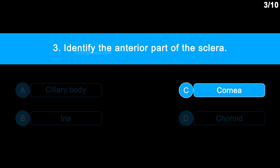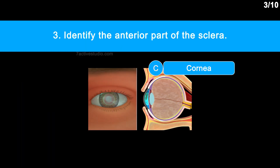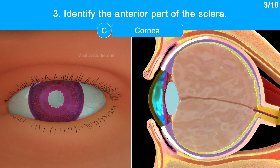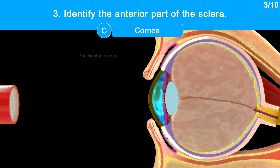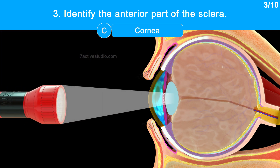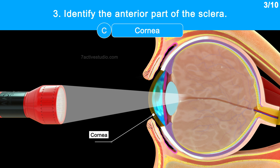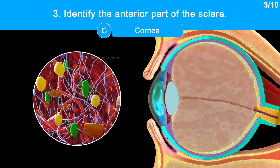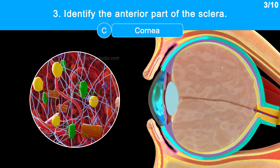The correct answer is option C, cornea. The anterior transparent portion of the sclera, which covers the iris and pupil and permits light to enter the interior, is known as the cornea. Sclera is made up of dense connective tissue.